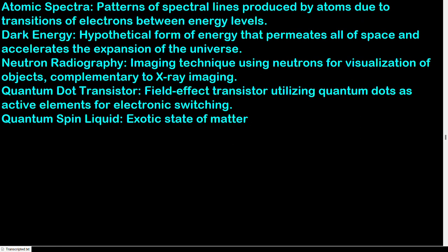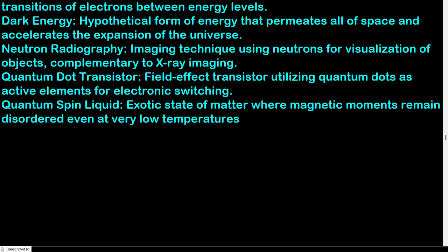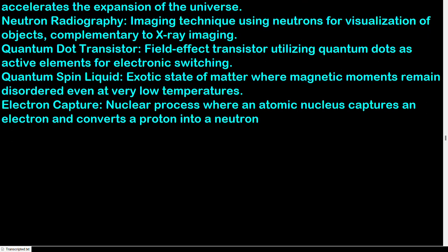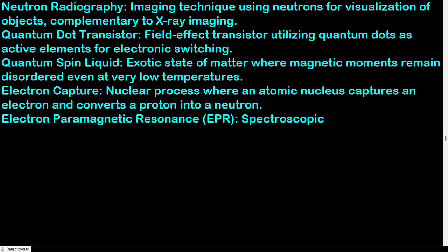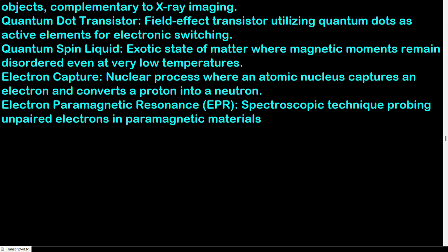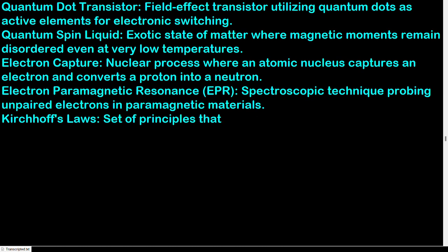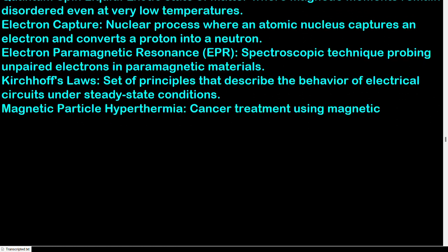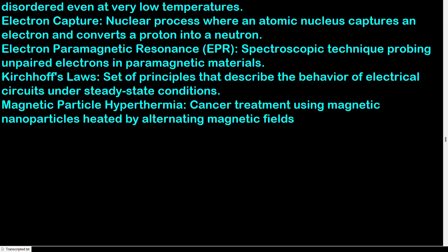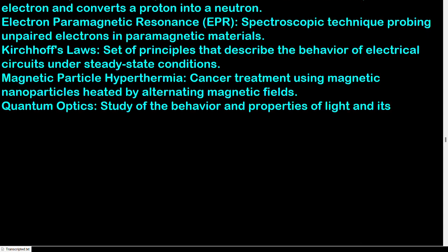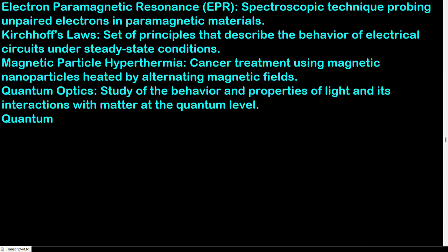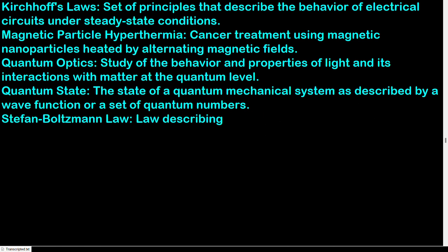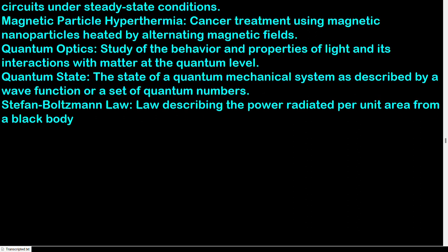Quantum spin liquid: exotic state of matter where magnetic moments remain disordered even at very low temperatures. Electron capture: nuclear process where an atomic nucleus captures an electron and converts a proton into a neutron. Electron paramagnetic resonance (EPR): spectroscopic technique probing unpaired electrons in paramagnetic materials. Kirchhoff's laws: set of principles that describe the behavior of electrical circuits under steady-state conditions. Magnetic particle hyperthermia: cancer treatment using magnetic nanoparticles heated by alternating magnetic fields. Quantum optics: study of the behavior and properties of light and its interactions with matter at the quantum level. Quantum state: the state of a quantum mechanical system as described by a wave function or set of quantum numbers. Stefan-Boltzmann law: law describing the power radiated per unit area from a black body in terms of its temperature.